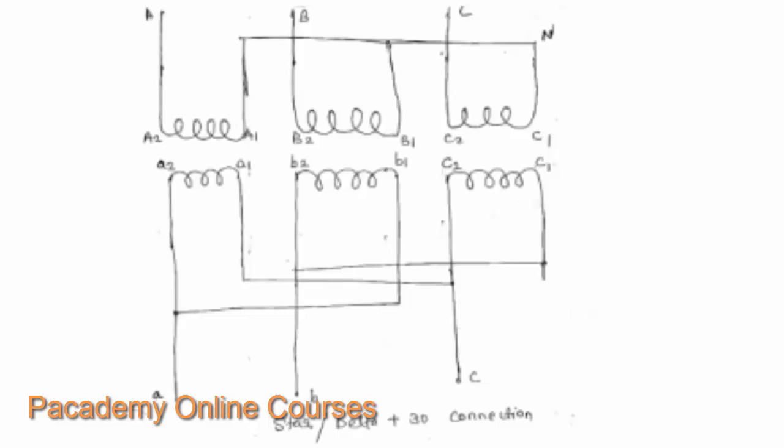And again, if you look at the phasor diagram of the plus 30 connection, there will be a phase shift of plus 30 degrees of each phase with the neutral, which can be shown in the phasor diagram in the next page.